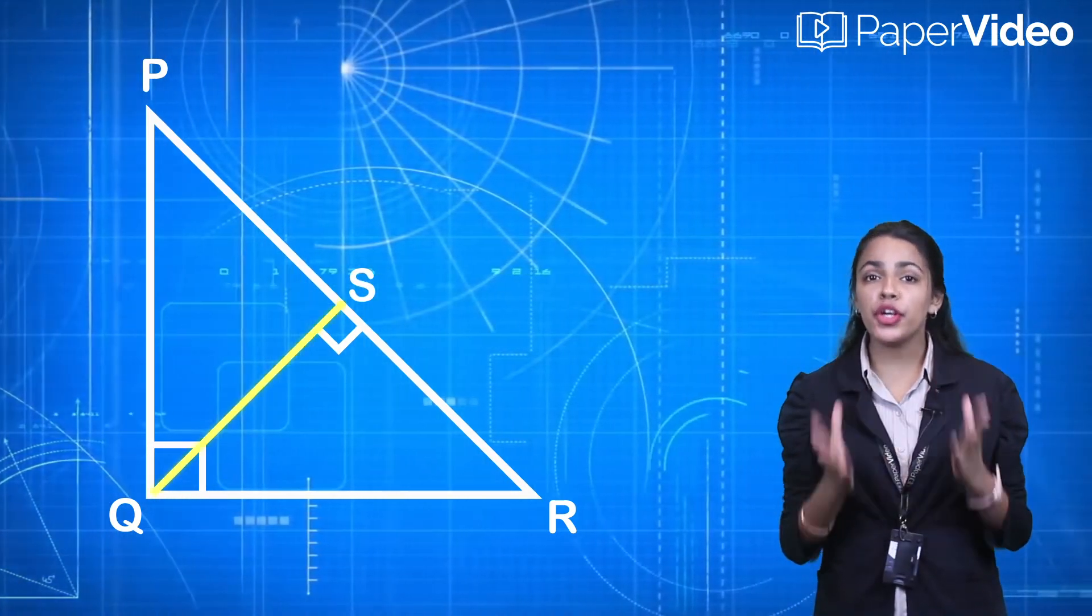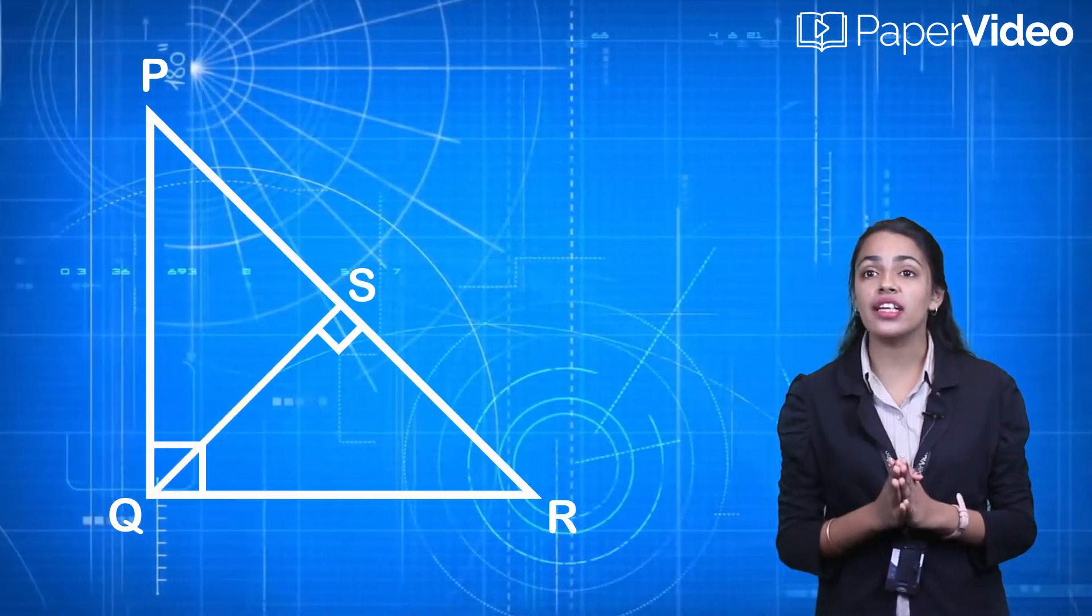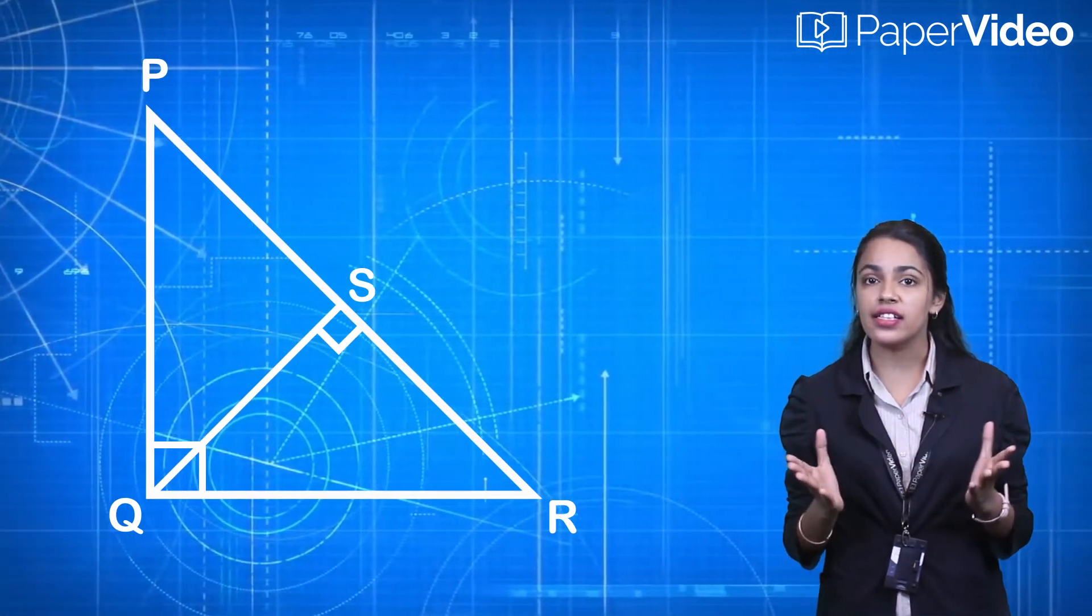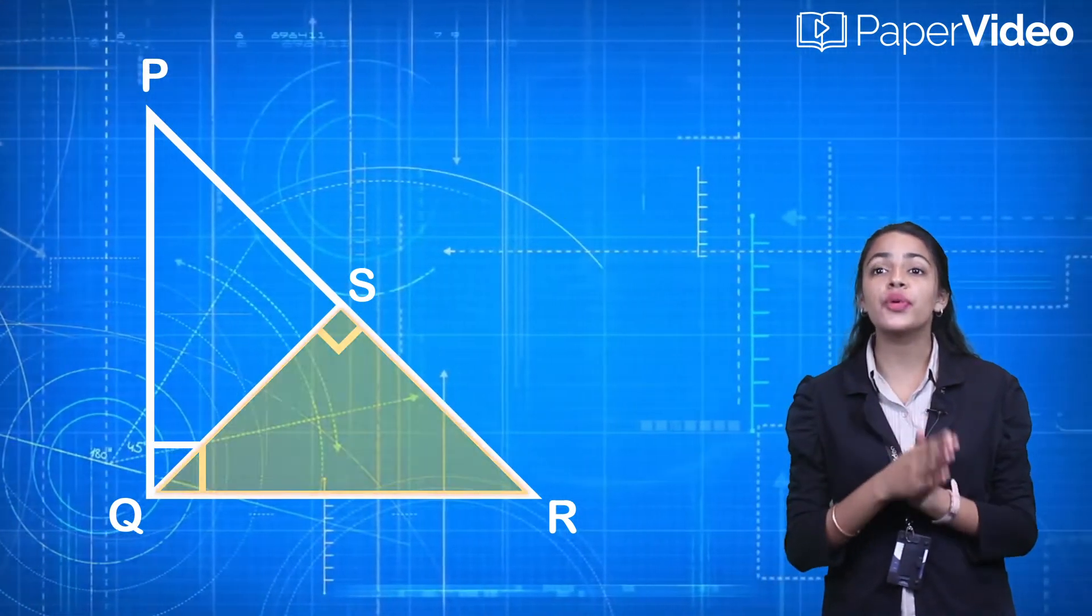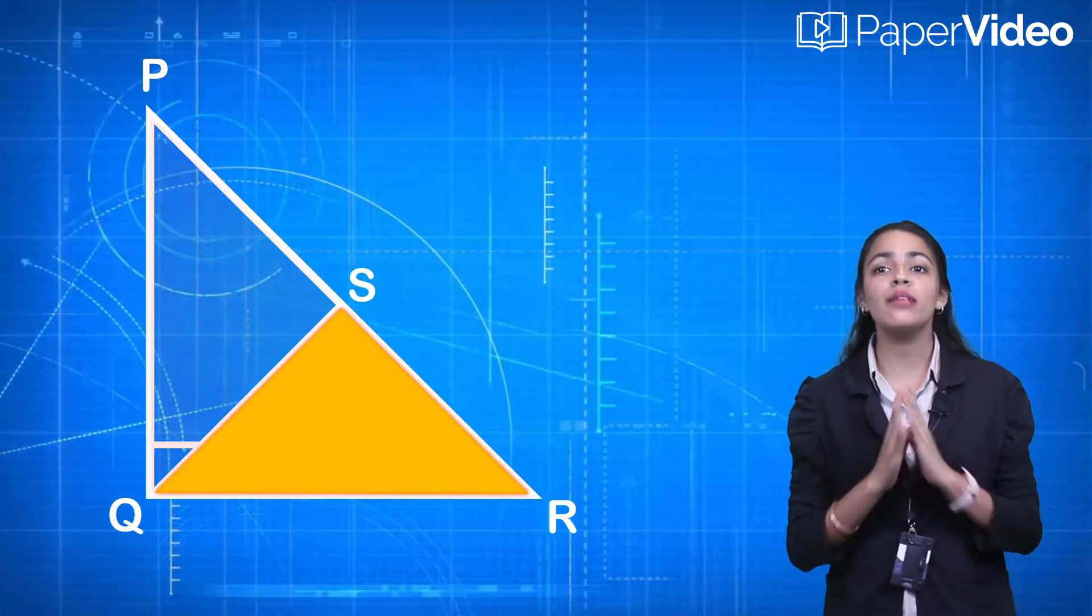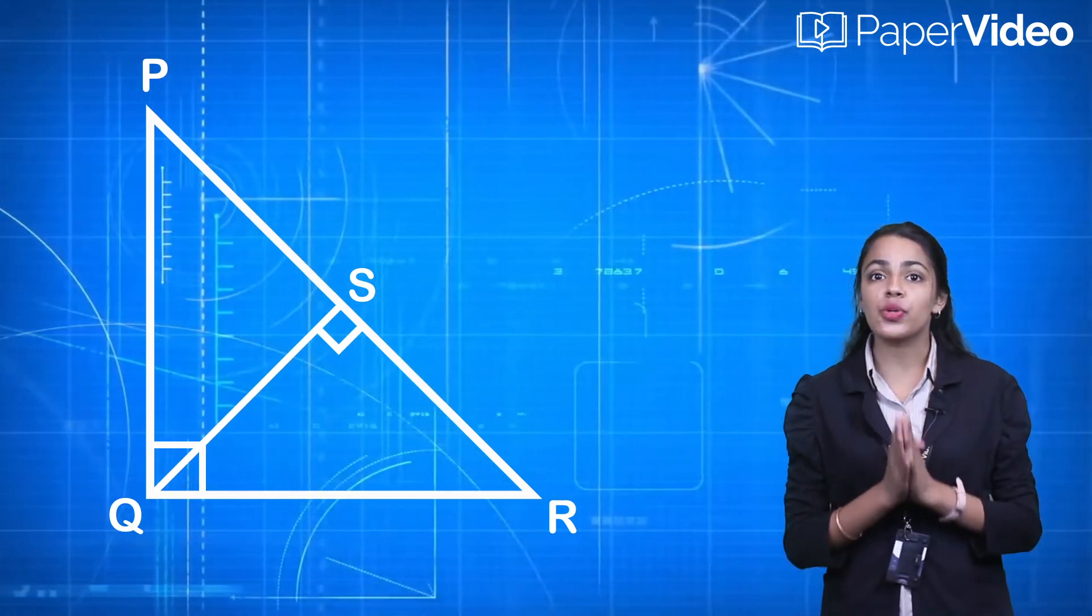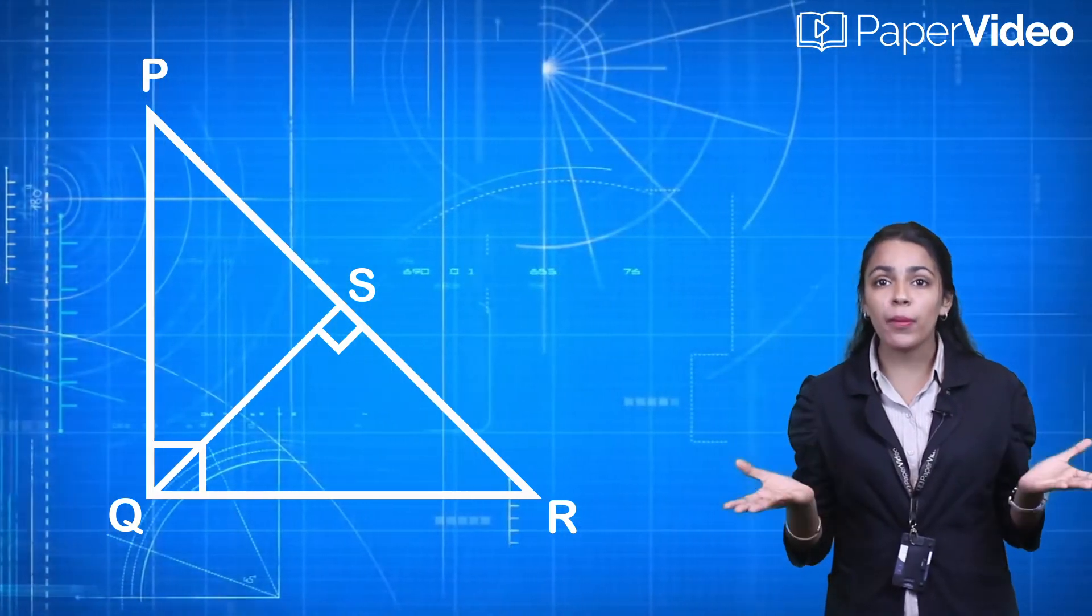This perpendicular QS divides triangle PQR into two similar right triangles: triangle QSR and triangle PSQ. Since these triangles are similar, their sides must be proportional.